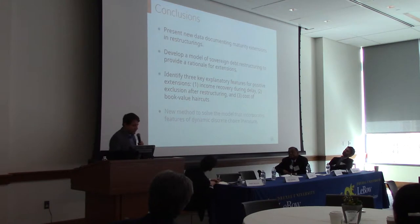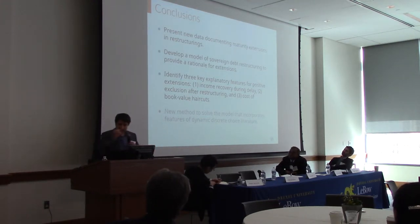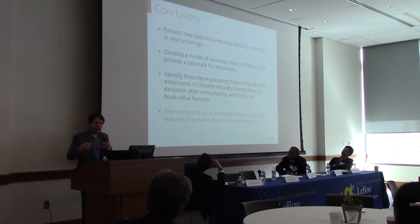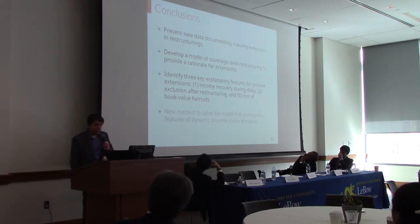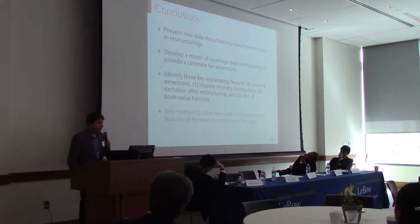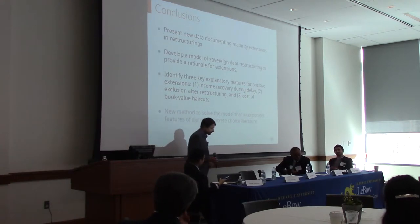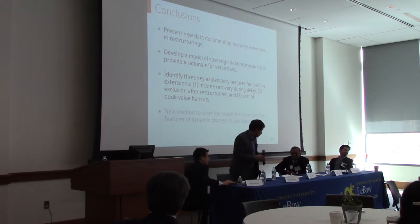In summary, this paper documents maturity extensions, which we see very often in restructurings. We develop a model and show that three forces push for longer maturity extensions: income recovery, exclusion after restructuring, and the regulatory cost of book value haircuts. Thank you.